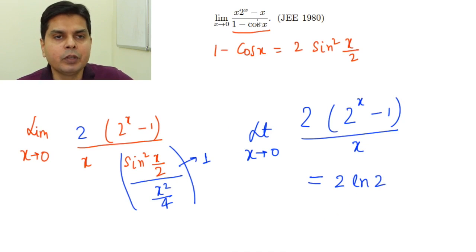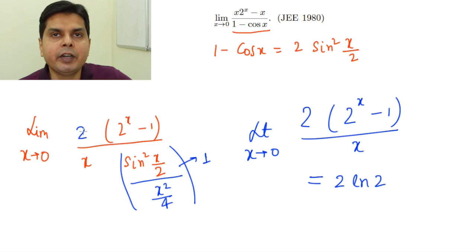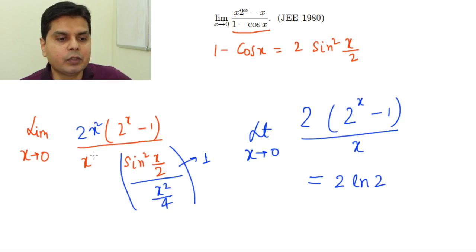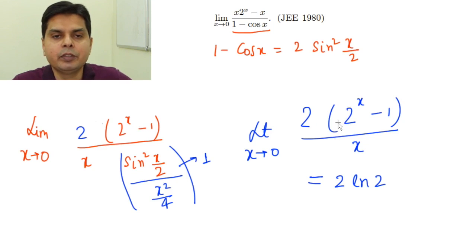To summarize: we transformed 1 minus cos x into 2 sin²(x/2). To evaluate the sine limit, we multiplied numerator and denominator by x to get x², then brought x² into place alongside the factor of 4, so the [sin(x/2)/(x/2)]² term becomes 1. The remaining limit is 2 times (2^x minus 1)/x, which by the standard formula equals 2 ln 2.